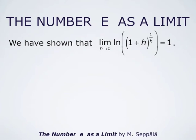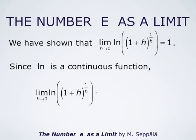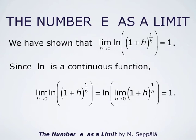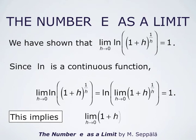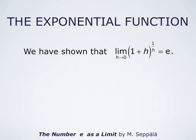Next, we use the fact that the natural logarithm is a continuous function. Then the limit as h approaches 0 of ln of (1 plus h) raised to the power 1 over h is the same as ln of the limit. But this must be 1, which means that the limit as h approaches 0 of (1 plus h) to the power 1 over h is e, because the natural logarithm of e is 1. So we have shown that the limit as h approaches 0 of (1 plus h) to the power 1 over h is e.